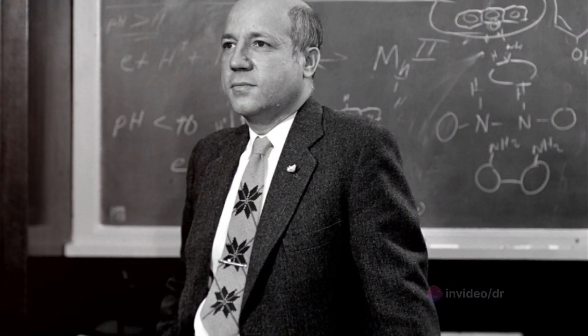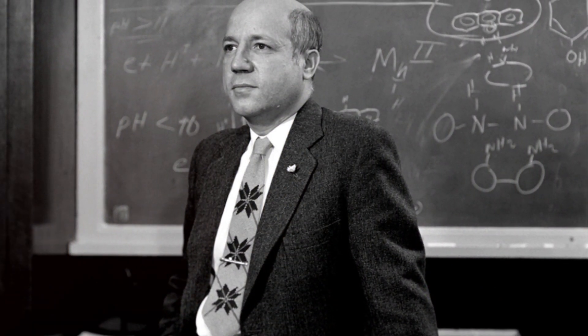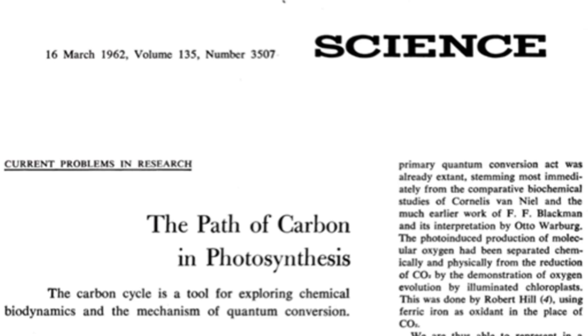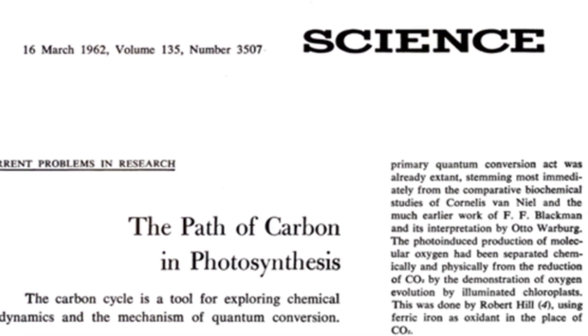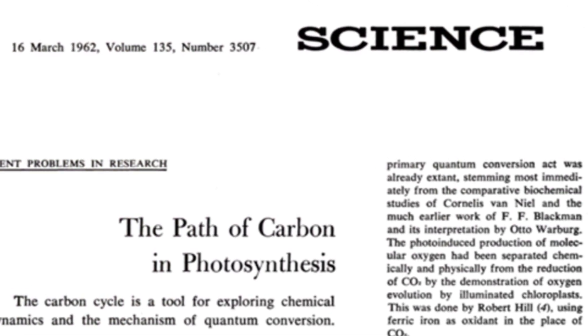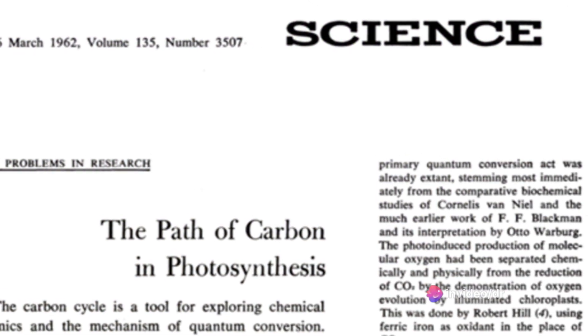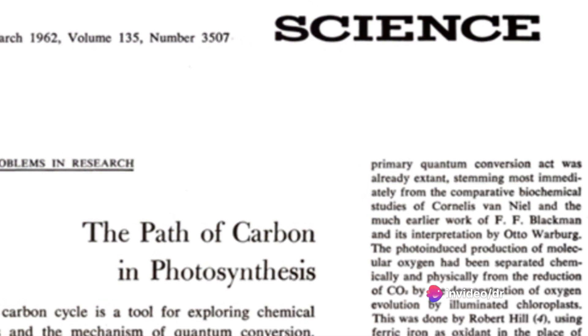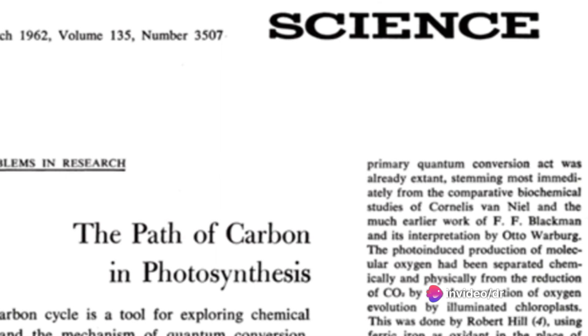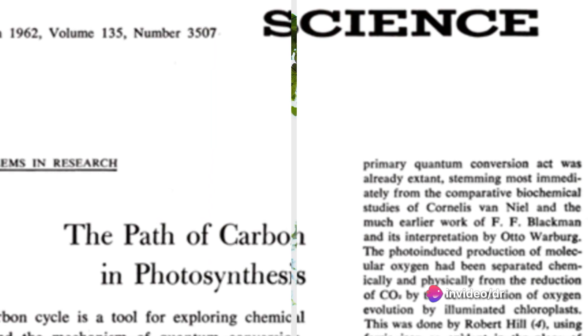In 1957, Calvin published 'The Path of Carbon in Photosynthesis' in the journal Science. Calvin was awarded the Nobel Prize for Chemistry in 1961 for discovering how plants turn carbon dioxide into sugar.